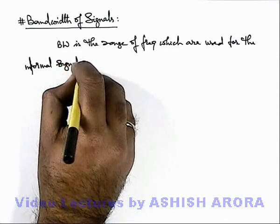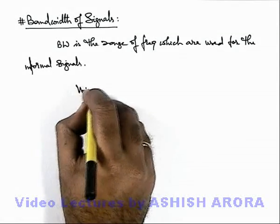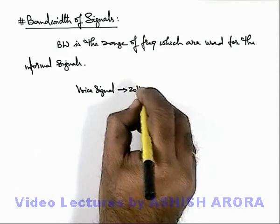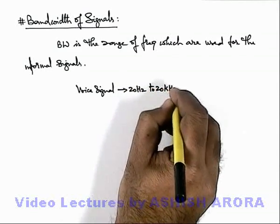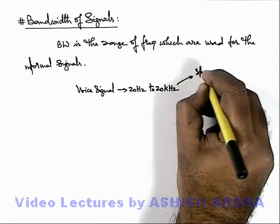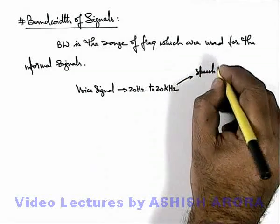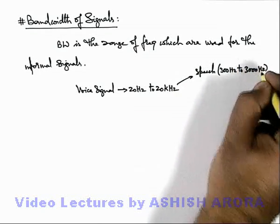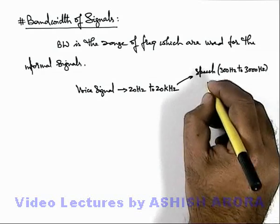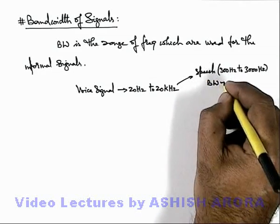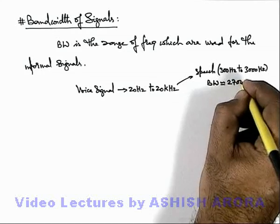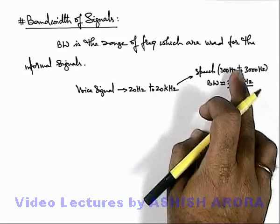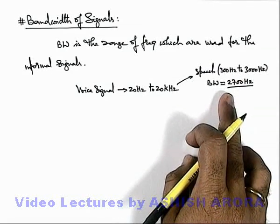For example, if we talk about voice signals, we know that audible frequencies are in the range of 20 Hz to 20 kHz. But when we talk about speech signals specifically, speech ranges from 300 Hz to approximately 3000 Hz — these are common speech frequencies. So here, bandwidth would be approximately 2700 Hz, which is the difference of the lower and upper frequencies within which the whole signal is being produced.